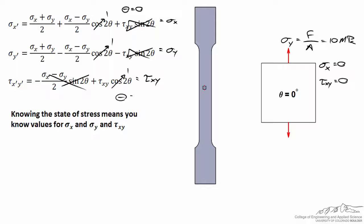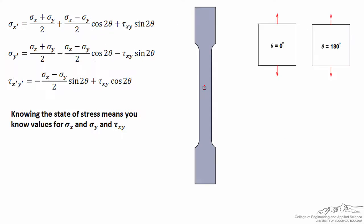The same thing is true if theta is equal to 180 degrees, simply because we've rotated it all the way around and the axes are in the same direction. If we look at the differential elements, we do see that they indeed look identical at theta equals zero and theta equals 180 degrees.